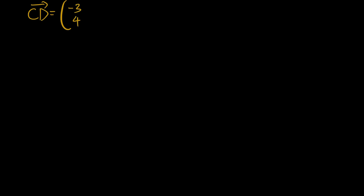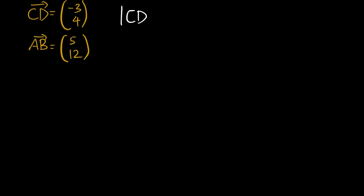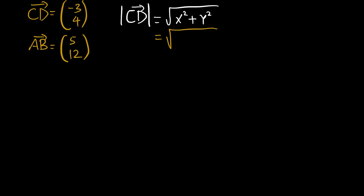Now a different problem: we have vector CD in component form negative 3 and 4, and vector AB in component form 5 and 12. We are asked to find the magnitude of vector CD. The formula is to take the square root of the x-component squared plus the y-component squared. For CD: square root of (negative 3) squared plus 4 squared.